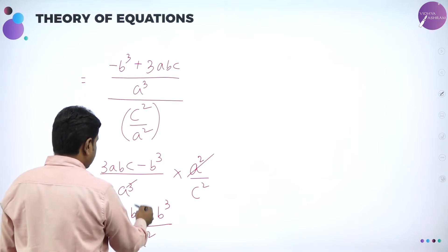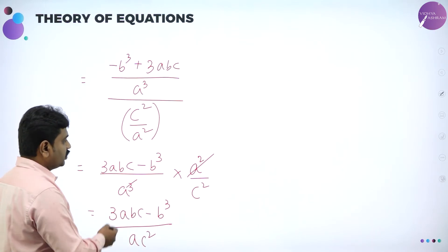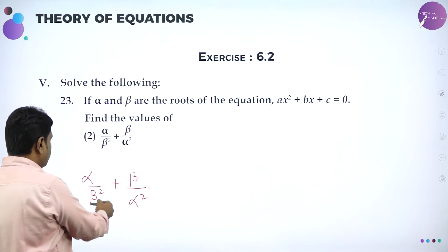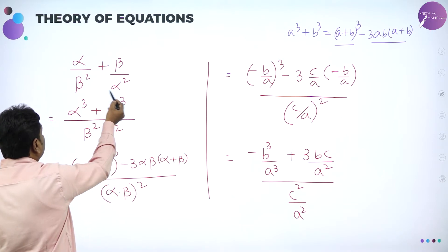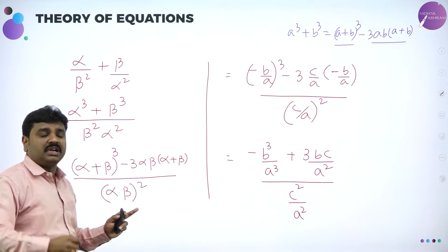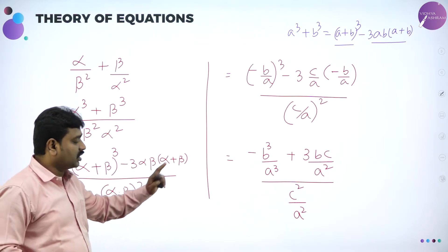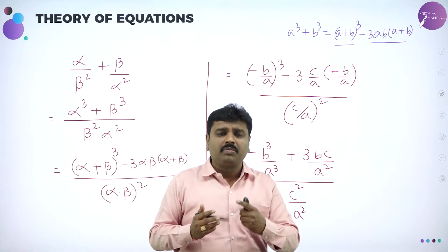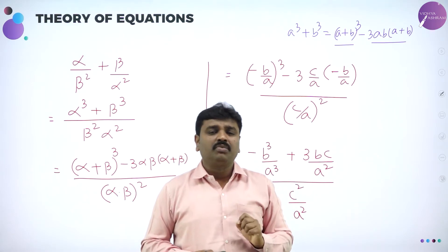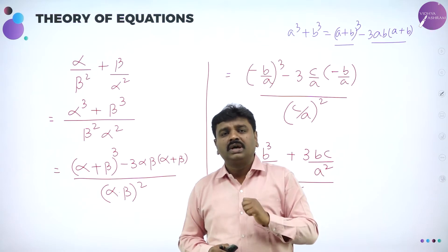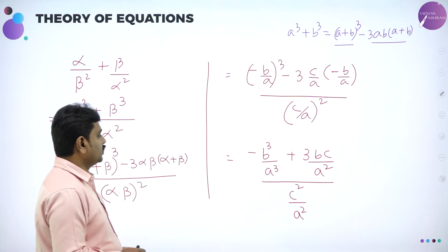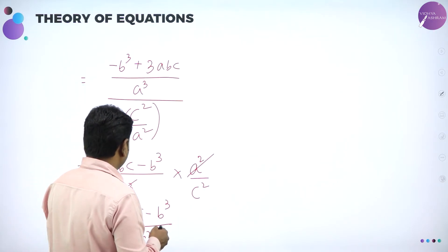In the denominator it is C squared by A squared. Further simplify: rewrite the numerator as 3ABC minus B cubed, then multiply by A squared over C squared. A squared and A cancel, leaving 3ABC minus B cubed divided by AC squared. This is the answer — the value of alpha by beta squared plus beta by alpha squared. Any problem, we first convert it into sum of the roots and product of the roots, because we have formulas for those.